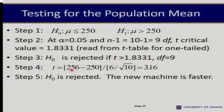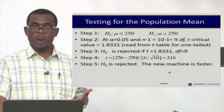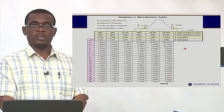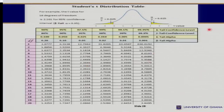The computed t is 3.16 based on the data from the question. So H0 is rejected, meaning the new machine is actually working faster. You use the t-table with a one-tailed test, alpha of 0.05, and 9 degrees of freedom to read the critical value.